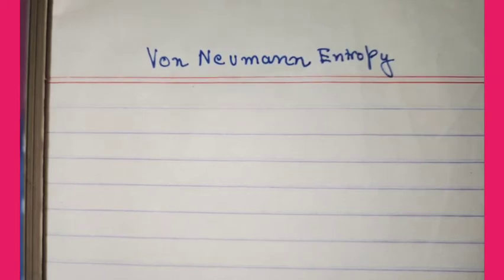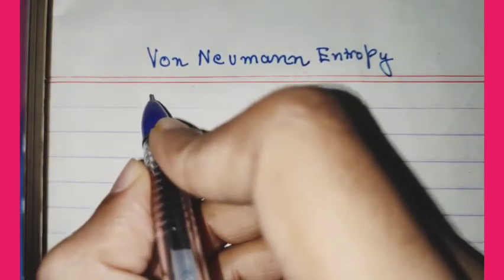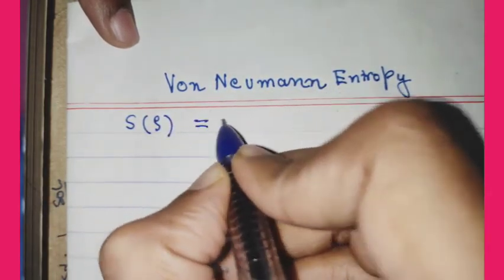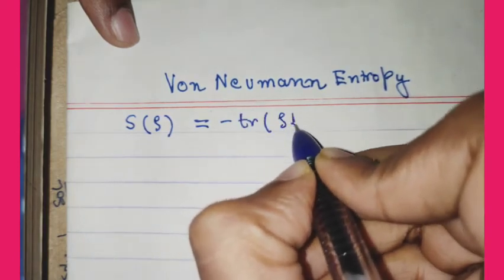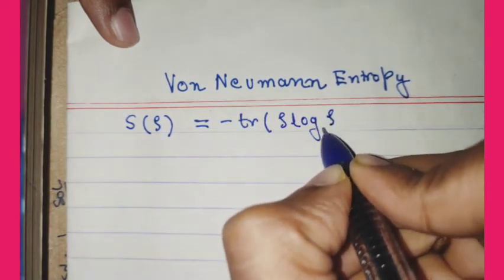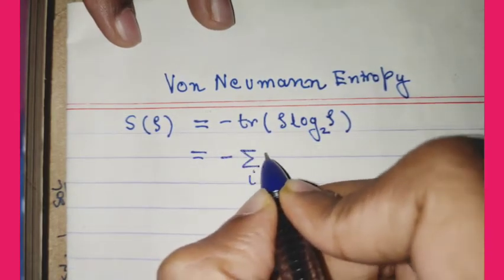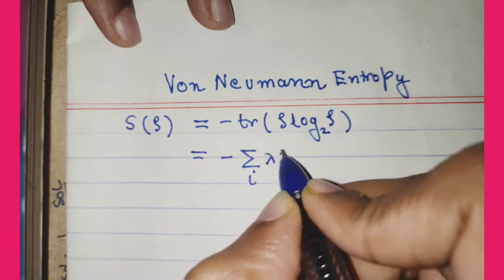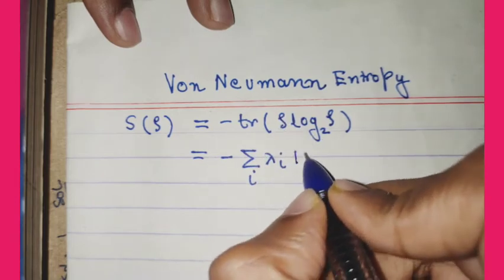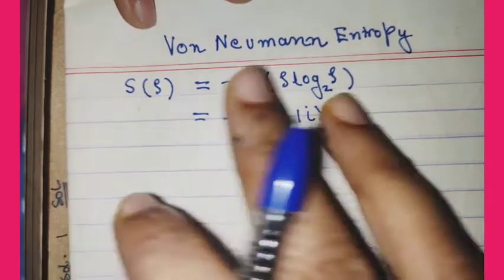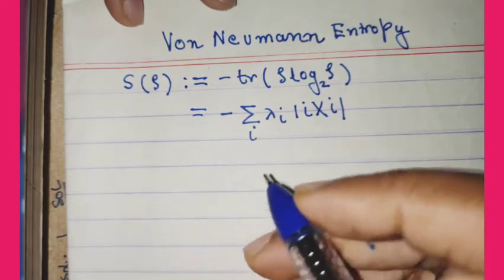Welcome to this video. I will be discussing some important results relating to von Neumann entropy. The von Neumann entropy S of rho for a density matrix rho is defined as minus trace of rho log rho, where the log is base 2. This is also written as minus summation over index i of lambda_i log lambda_i, where lambda_i are the eigenvalues of the density matrix.